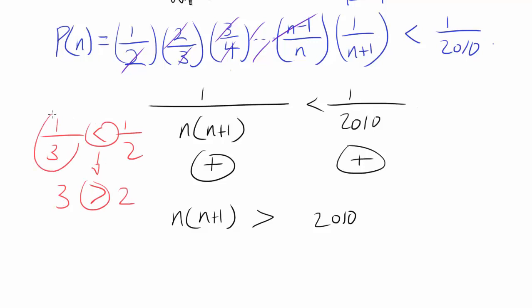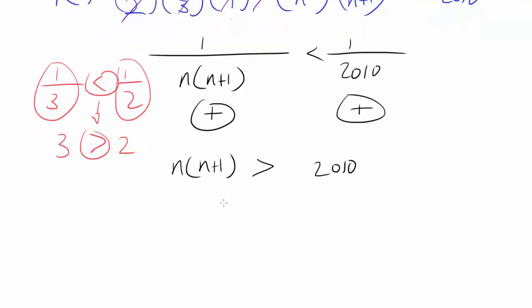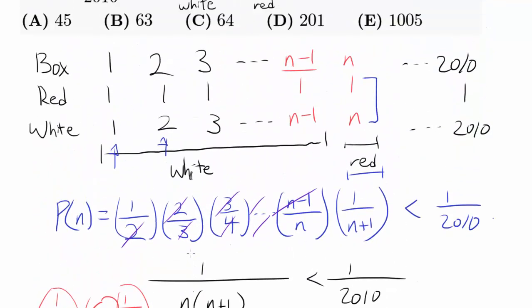When both quantities are positive, you switch the sign. So you have n times n+1 is greater than 2010.